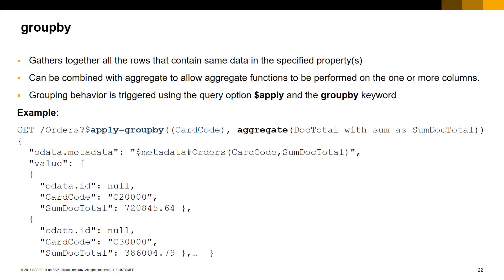GroupBy gathers together all the rows that contain the same data in the specified properties. GroupBy is often combined with aggregate to perform aggregate functions on specific columns. To trigger GroupBy behavior, we use the query option $apply with the GroupBy keyword. The provided example retrieves a list of orders grouped by CardCode — meaning same business partner — and aggregates the DocTotal by business partner.